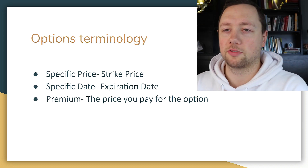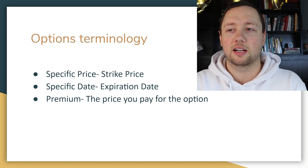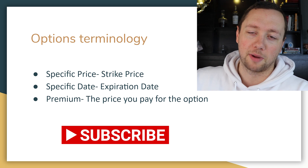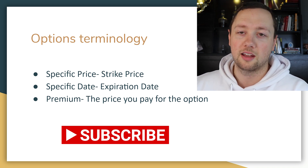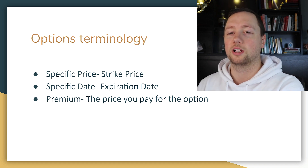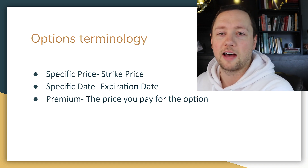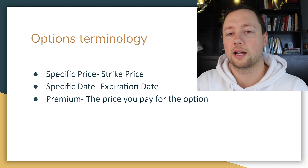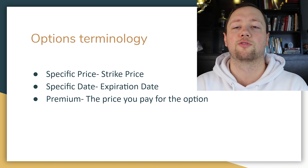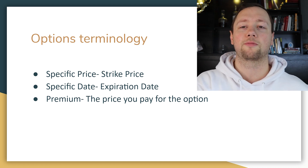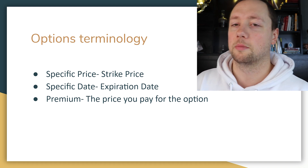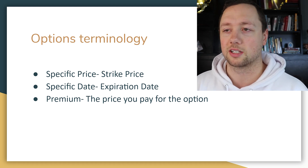To talk about options we have some specific terminology. That specific price I referred to is called the strike price — that is the price at which you are going to buy the stock in the future. That future date is referred to as your expiration date; that is when your option will expire and will no longer have any value. The price you actually pay to acquire that option is called the premium — that is your upfront investment.